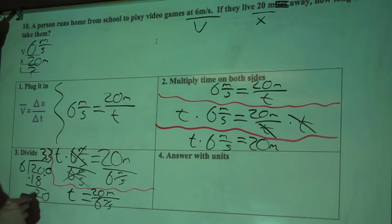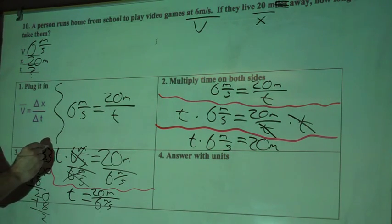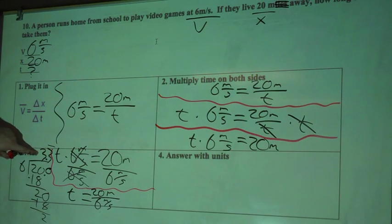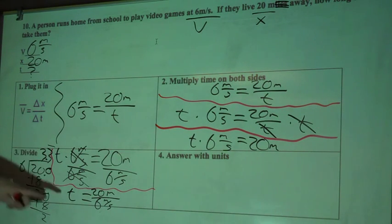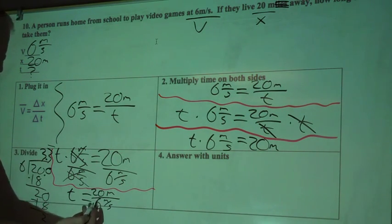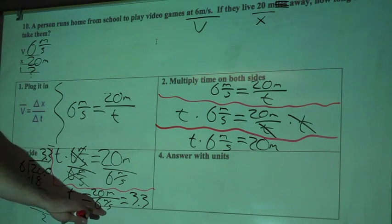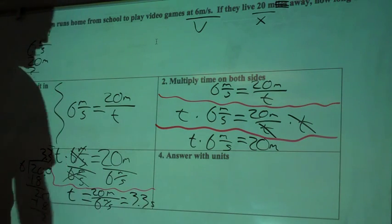6 goes into 20, 3 times. I'm also going to get 18. Subtract, I'll get 2 again. This will repeat forever unless I stop and I just put a repeating decimal sign or a line over the 3. Okay, so now we've got 3.3 as our answer. And we simplified 20 divided by 6 to get that. So we'll go 3.3. And the units that we had here for time are seconds. So we'll write those in there, seconds.